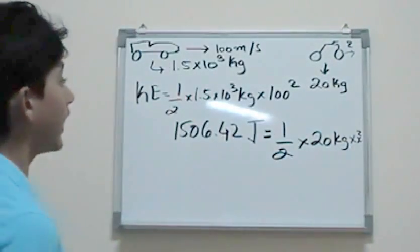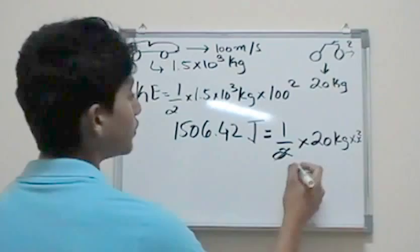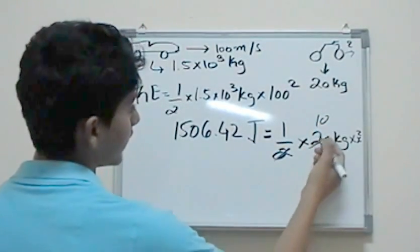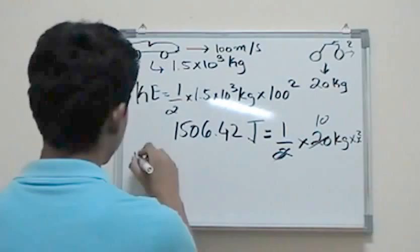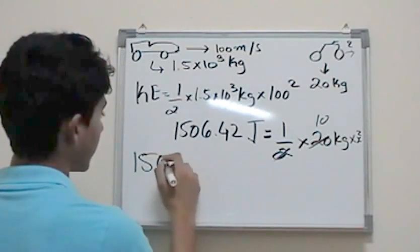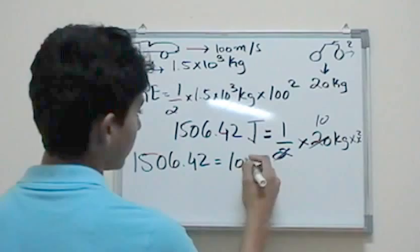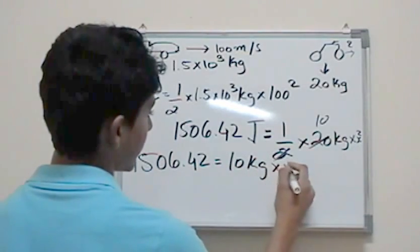KE is equal to half times mass, which is 20 kg, times X squared because X is the variable we don't know. Now this is the easy calculation you can do. 20 divided by 2 is 10. So 10 is here. So this would be 1506.42 is equal to 10 kg times X squared.